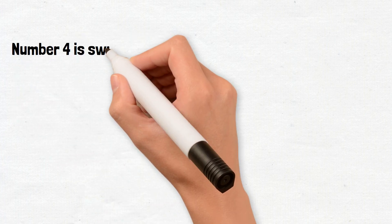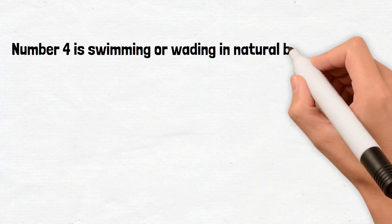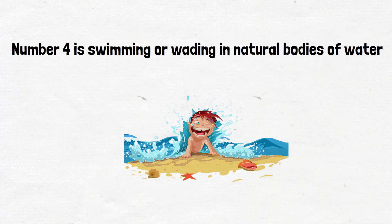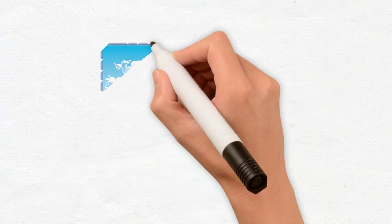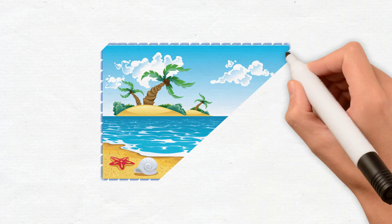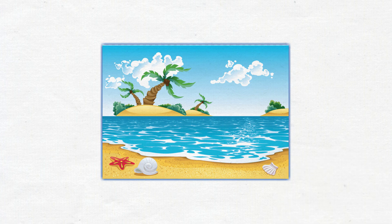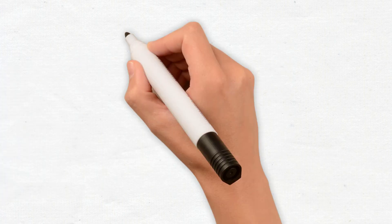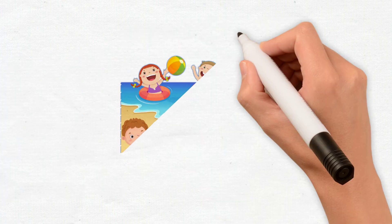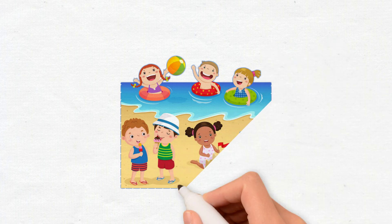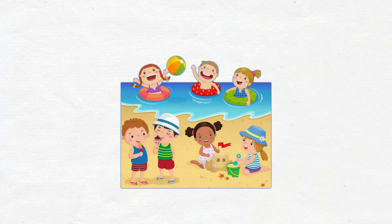And finally, number four is swimming or wading in natural bodies of water. Another enjoyable way to practice earthing is by swimming or wading in natural bodies of water such as oceans, lakes, or rivers. These water bodies are excellent conductors of the Earth's energy, allowing you to connect with nature and enjoy the benefits of earthing while cooling off and having fun.